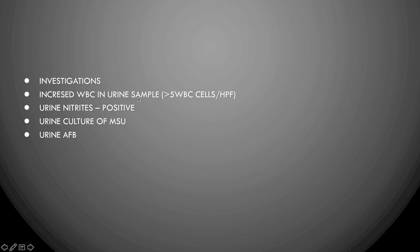UTI investigations: increased WBCs in urine — more than 5 WBCs per high power field — called pyuria or leukocyturia. Urine nitrites become positive only with bacterial invasion, particularly gram-negative bacteria, since bacteria convert nitrates to nitrites. Urine culture of midstream urine shows growth and sensitivity. Urine acid-fast bacilli testing is done if Mycobacterium infection of the urinary tract is suspected.